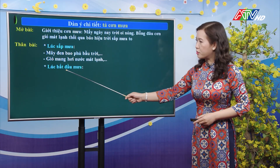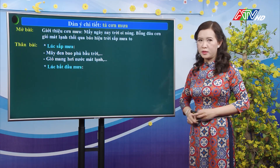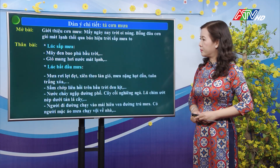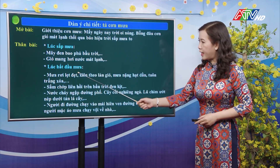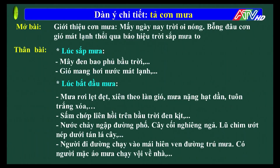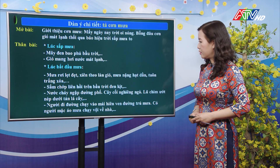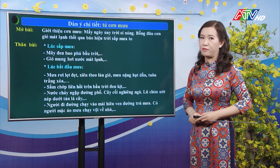Tiếp theo là tả lúc bắt đầu mưa: mưa rơi lẹt đẹt, xiên theo làn gió, mưa nặng hạt dần, tuôn trắng xóa, sấm chớp liên hồi trên bầu trời đen kịt, nước chảy ngập đường phố, cây cối nghiêng ngã, lũ chim ướt núp dưới tán lá cây. Người đi đường chạy vào mái hiên ven đường trú mưa, có người mặc áo mưa chạy vội về nhà.